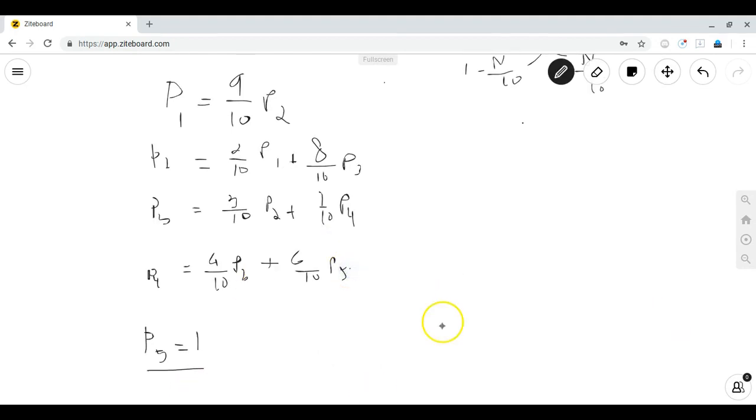Now that we have p5 equals 1 we can just plug this in so we see that p4 is equal to 2 fifths p3 plus 3 fifths because p5 is equal to 1.